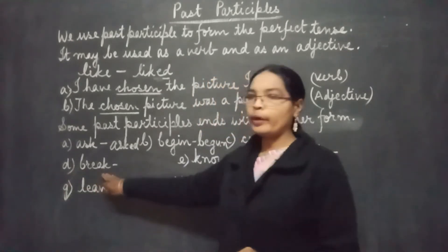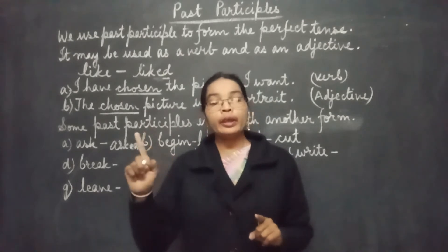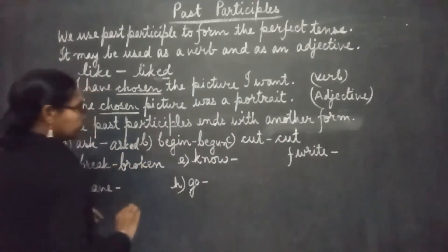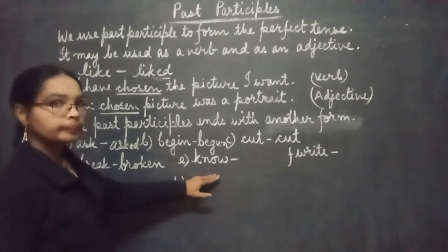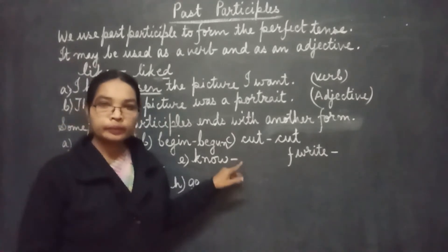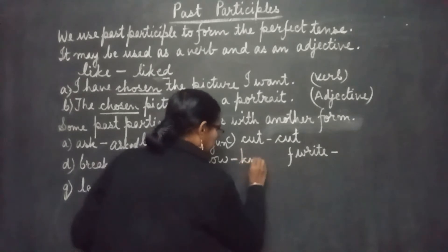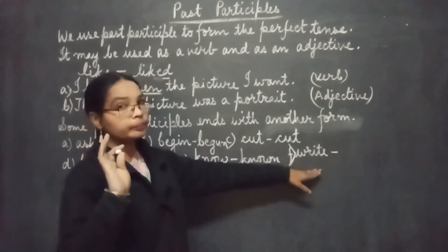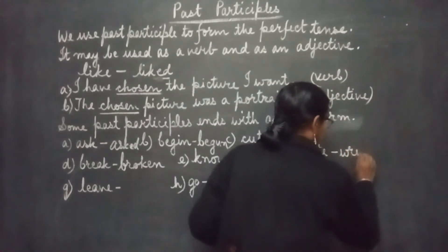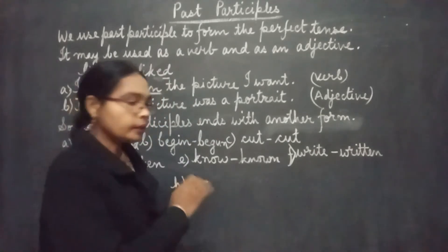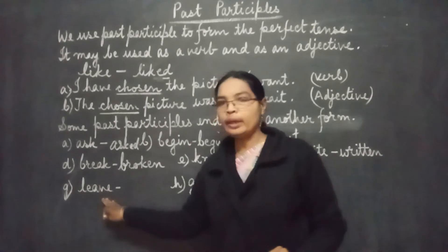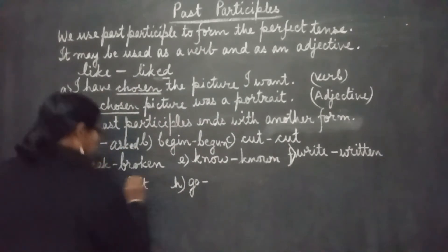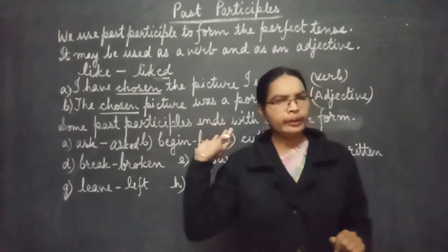Number D: 'break' — V1 'break', V2 'broke', V3 'broken'. Number E: 'know' — V3 is 'known'. Number F: 'write' — V1 'write', V2 'wrote', V3 'written'. Something different each time. Number G: 'leave' — V2 'left', V3 'left'. Number H: 'go' — V2 'went', V3 'gone'. The ending is not the same across verbs.